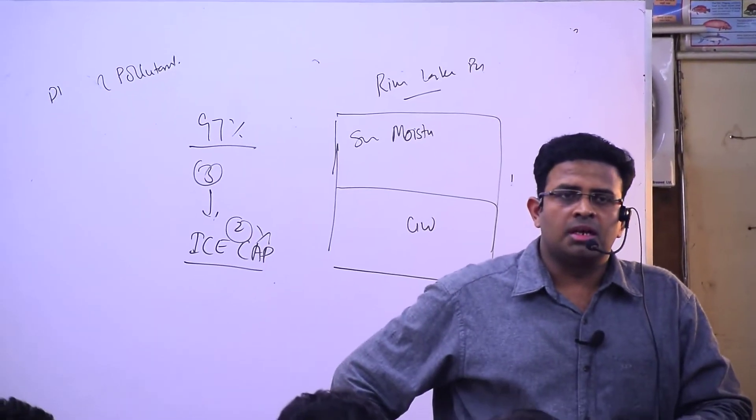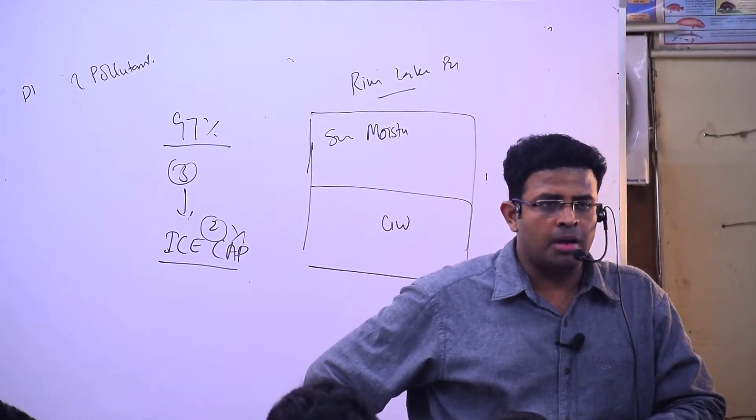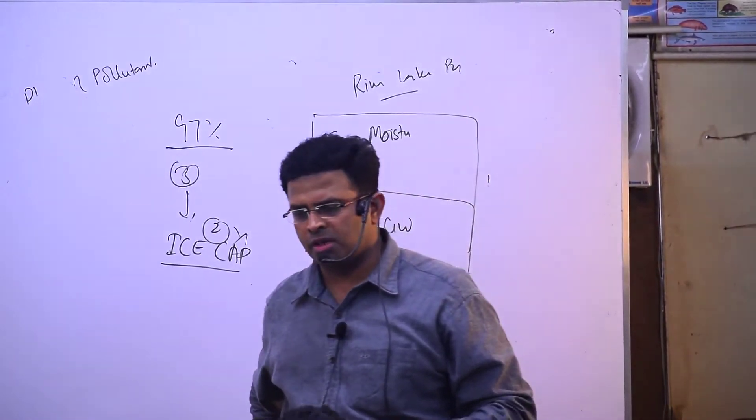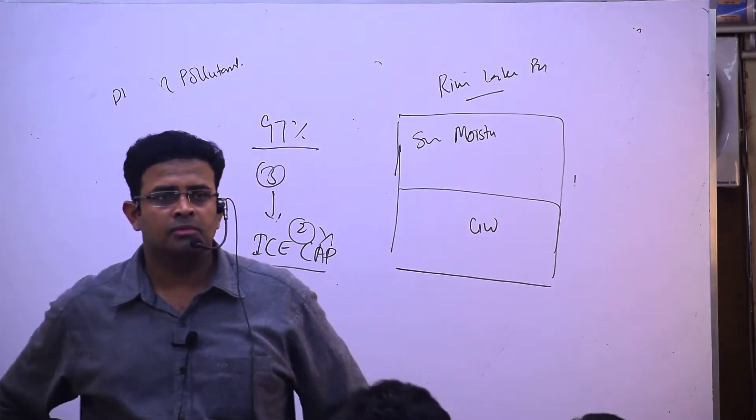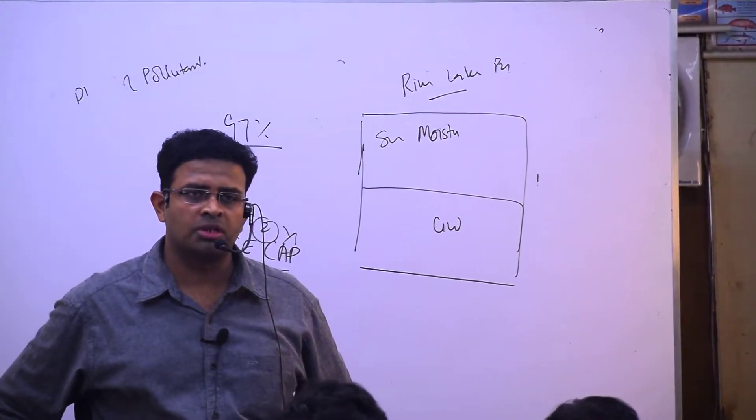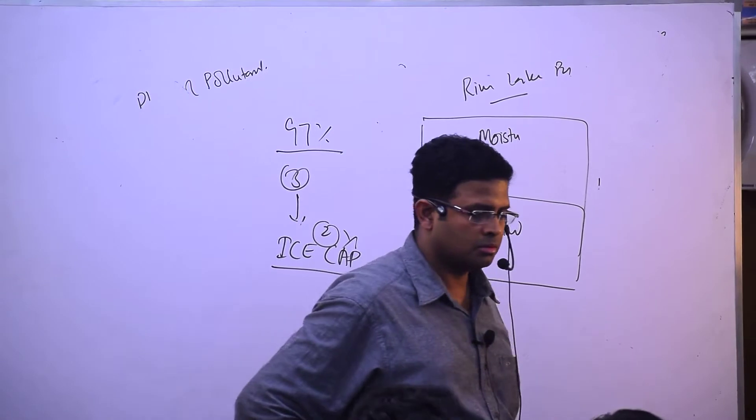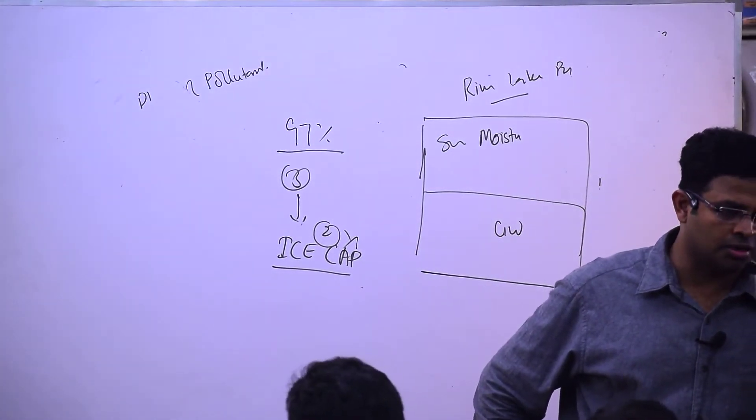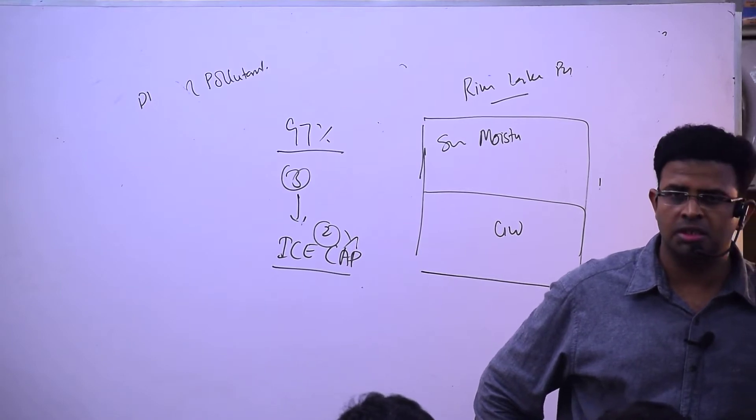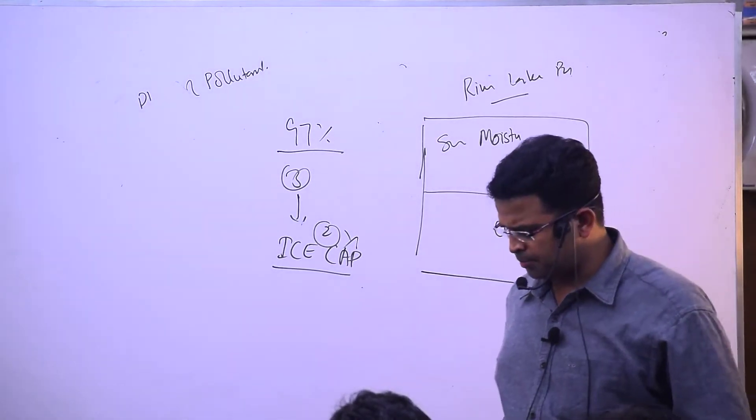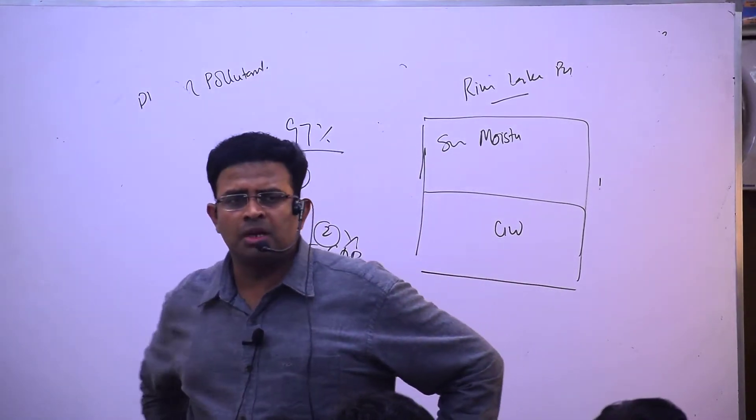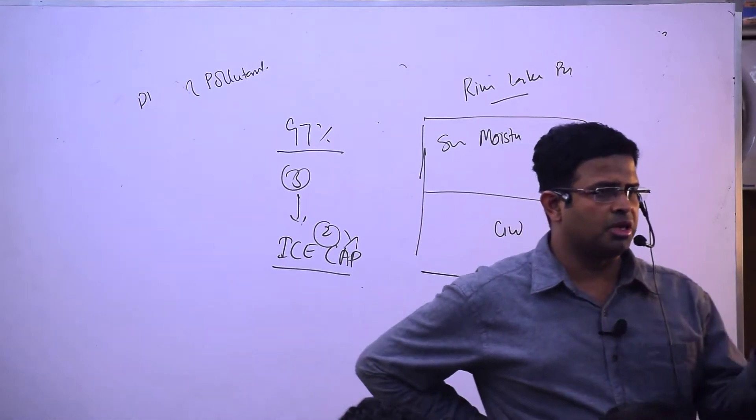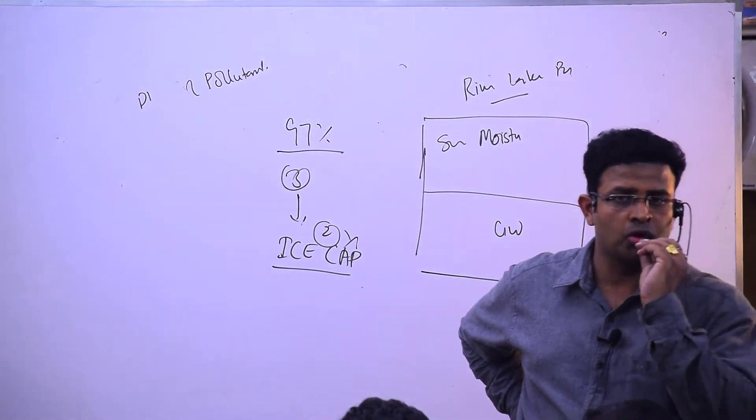We talked about particulate matter, primary and secondary pollutants. Carbon monoxide causes asphyxiation, lead causes congenital and carcinogenic diseases. Several primary pollutants come after burning of fossil fuels in the initial state.